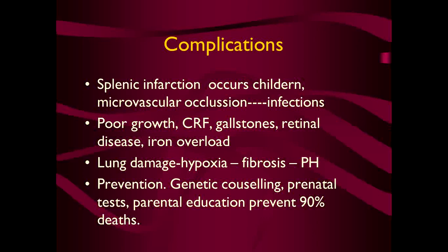Prevention of sickle cell anemia is achieved through genetic counseling, prenatal tests, and parental education, which can prevent as much as 90% of deaths. The education of the parents has a huge benefit.